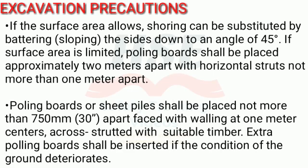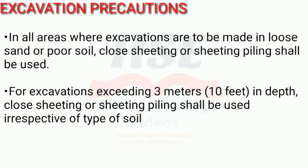If surface area is limited, poling boards shall be placed approximately 2 meters apart with horizontal struts not more than 1 meter apart. Poling boards or sheet piles shall be placed not more than 750 millimeters (30 inches) apart, faced with walling at 1 meter centers, across strutted with suitable timber. Extra poling boards shall be inserted if the condition of the ground deteriorates.